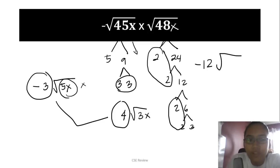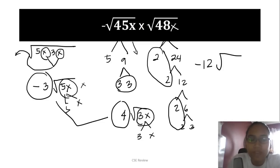After that, deal with what's inside. Inside you have 5 and x. Here you have 3 and x. Can we do anything? When you multiply, you put them all under one radical: 5x, 3x. Since you now have two x's under one radical, you can extract that x. So instead of just negative 12, it becomes negative 12x, and what's left without pairs is 5 and 3. So negative 12x√15.